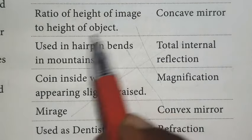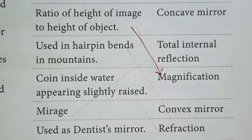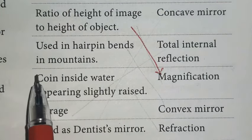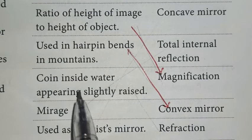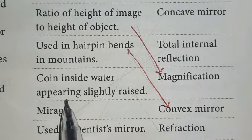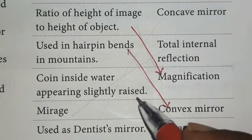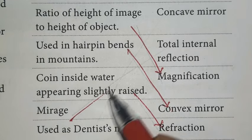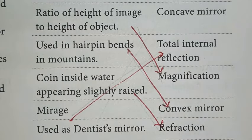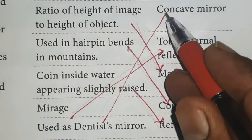Ratio of height of image to height of object, that is magnification. Used in hairpin bends in mountains, convex mirror. Coin inside water appearing slightly raised, due to refraction. Mirage is due to total internal reflection. Used as dentist's mirror, i.e., concave mirror.